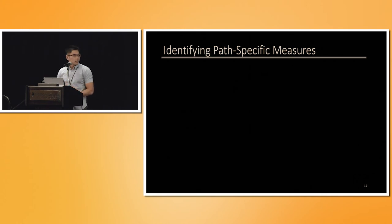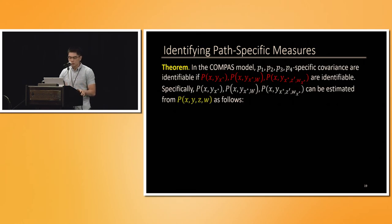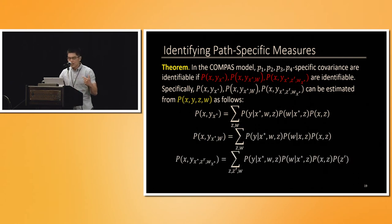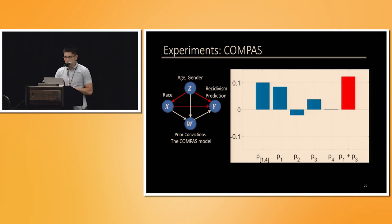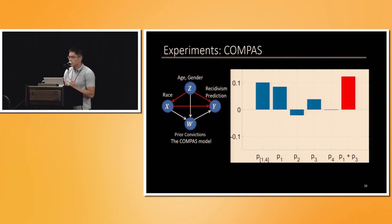We also provide identification formulas for the proposed path-specific covariances from the observational distribution P(X,Y,Z,W). We apply these identification formulas to the COMPAS dataset and compute the corresponding path-specific measures. The effect of discrimination, marked as a red column, is very positive and significant. This result confirms that the discriminative pathways have an adverse impact on the risk score of members of ethnic minorities, meaning that the COMPAS system is indeed discriminative.